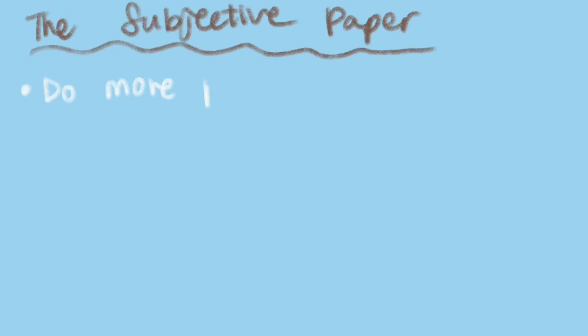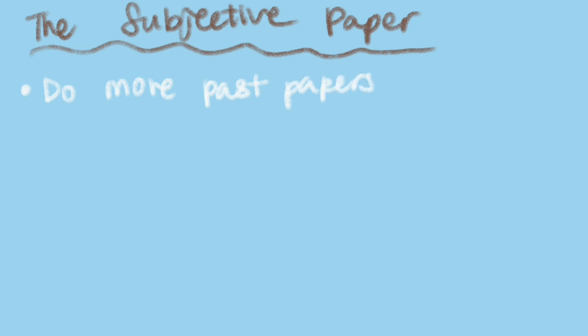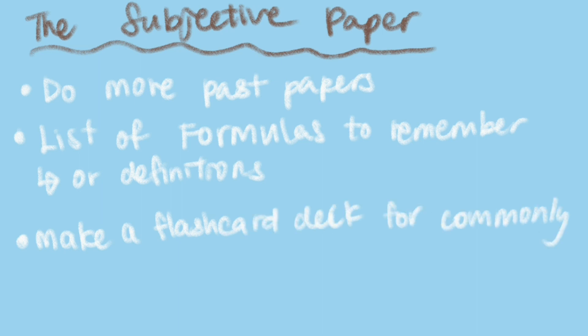For the subjective paper, which is the one with long answers, because there's a lot more content in A2, it's important to understand before memorizing. Understand and then memorize with reference to the past papers. You should do more past papers and make more notes because there are a lot of similar question types. You should also make a list of the formulas you need to remember. As you do the past papers, you'll realize you don't know certain formulas. Then add them to your list. There are quite a lot of formulas and definitions to memorize. I used flashcards for this.